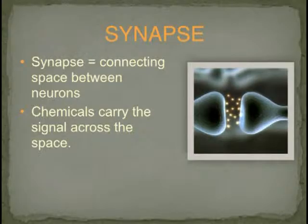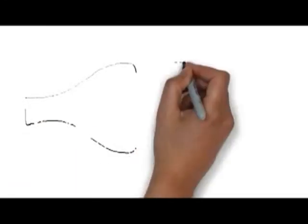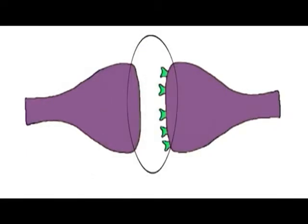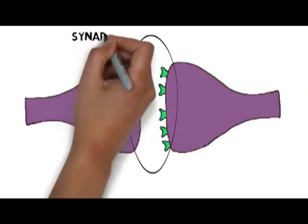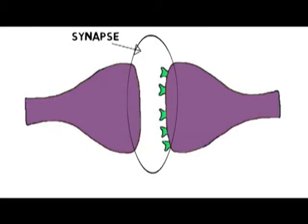Now, we're going to watch a video about how this transmission happens between brain cells. Most communication between neurons occurs at a specialized structure called a synapse. The synapse is an area where two neurons come close enough to one another that they are able to pass chemical signals from one cell to another.